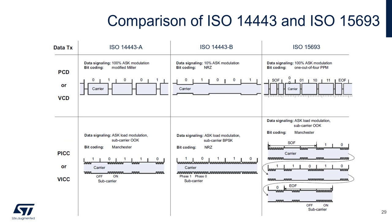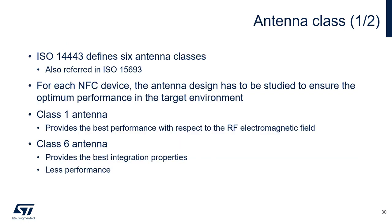Here we see a comparison of 14443 and 15693 in terms of data signaling and bit encoding from the PCD or VCD to the PICC or VICC. There are six antenna classes defined in ISO 14443, also referred to in 15693. A class 1 antenna provides the best performance with respect to the RF electromagnetic field because it is the largest of all the antennas. A class 6 antenna provides the best integration properties because it's a very small antenna; however, it delivers less performance.